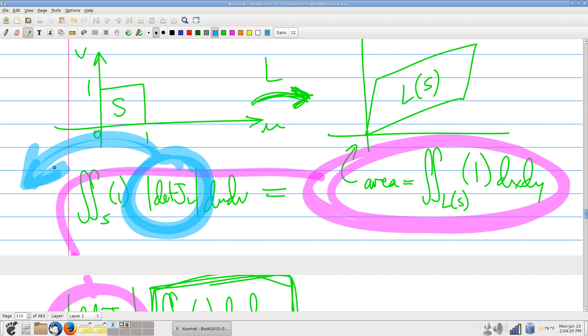right, well, the resulting area is going to be one times whatever that stretching factor is. So, the resulting area is going to be the stretching factor. So, the idea we're supposed to get here is that the image of the unit square is the stretching factor. The area of the image of the unit square is the stretching factor.